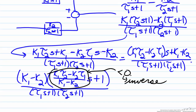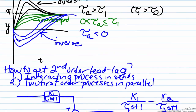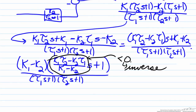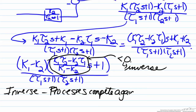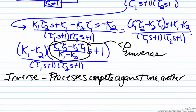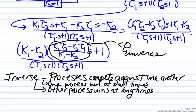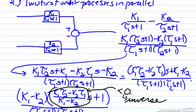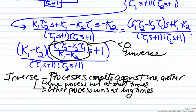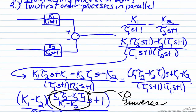An inverse response starts going in one direction and ends in the other. This means we must have two parallel processes competing against each other — each process has to have its moment. One process wins at short times, and another process wins at long times. To win means the magnitude of that function is higher. At long times, s approaches zero, the denominators become unimportant, and what remains is the difference of the gains k1 and k2. So a larger gain wins at long times.